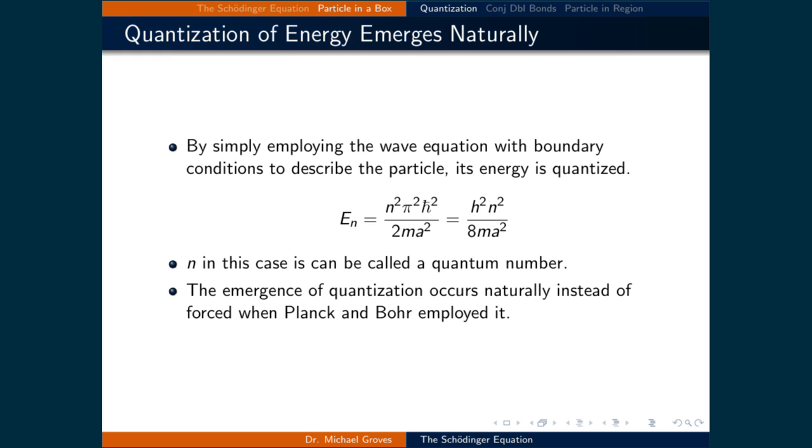In this case, n could be called a quantum number. Recall that when Planck and Bohr employed quantization to solve for black body spectra and the hydrogen atom spectrum, they deliberately inserted it so that their model matched experimental reality. This was not necessary here, and this result further cemented the idea of quantization as a valid one.